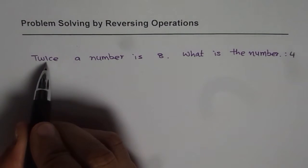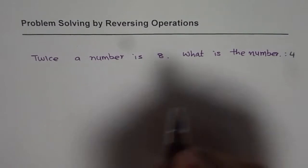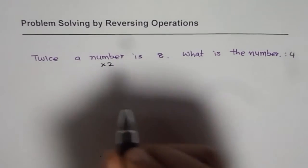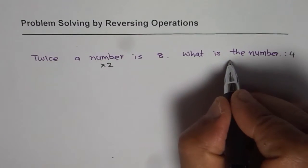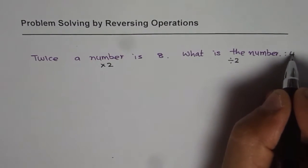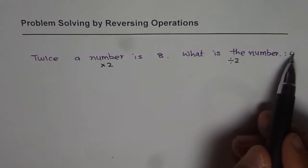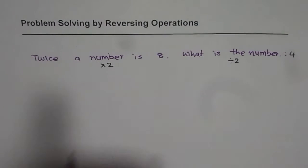So, twice means times 2. To get the original number, we divide by 2. If you start at 4, then twice 4 is 8. So that is the kind of operation which we are looking into.